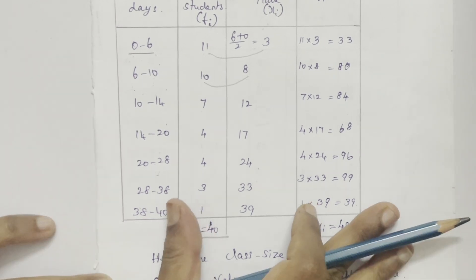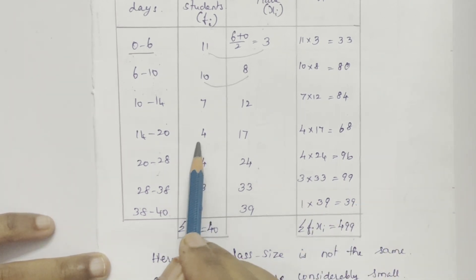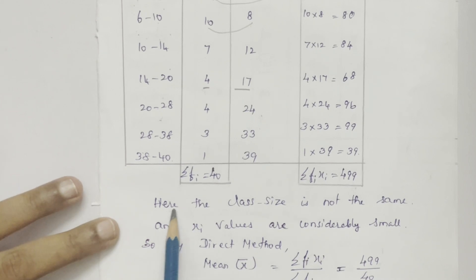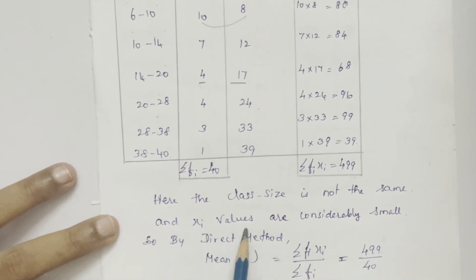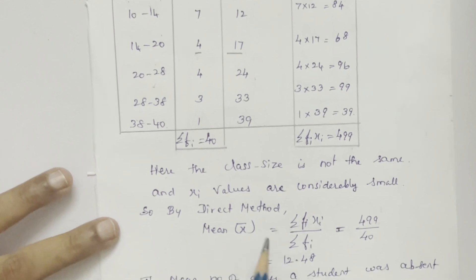I have processed this problem in direct method, so because these two numbers fi and xi are considerably small, so I chose direct method. Here the class size is not the same and xi values are considerably small, so by direct method.